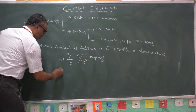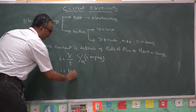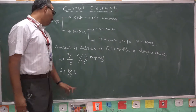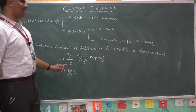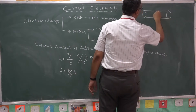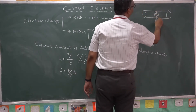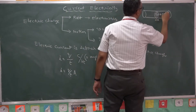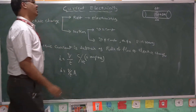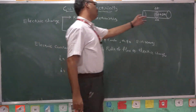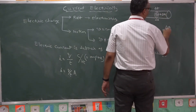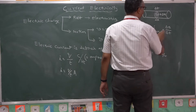Simply you can write I is equal to Q by T amperes. Electric current is equal to charge by time in amperes. Here, we will define two types of currents. If suppose there is a conductor with some cross-section, dA is the area of cross section through which delta Q is the charge flowing in a time delta T. The total charge flowing divided by total time taken is called average current.